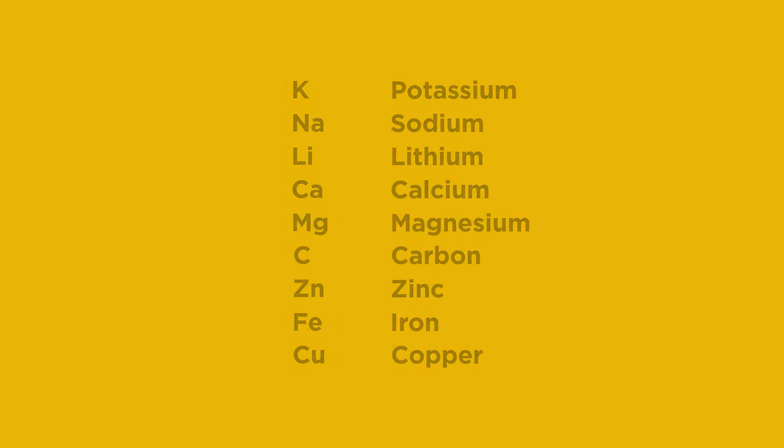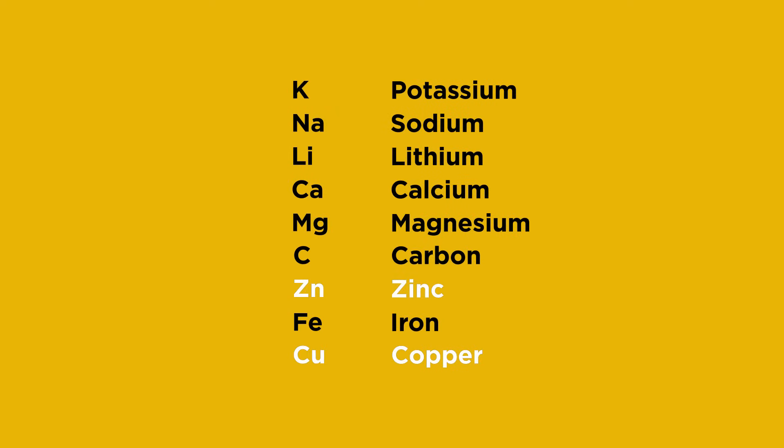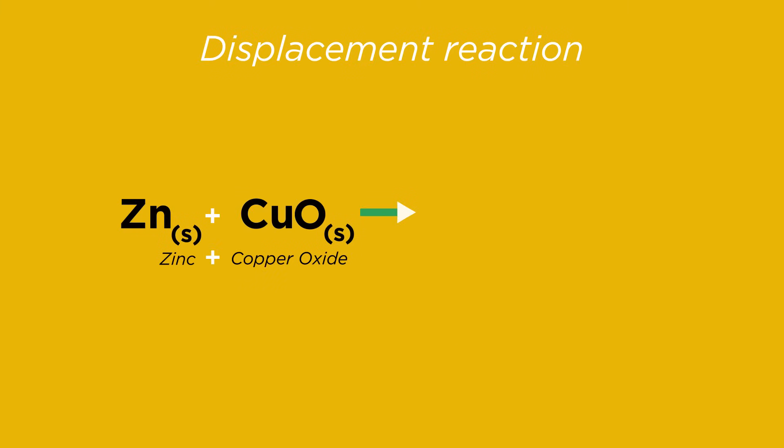Look at where the metals zinc and copper are in the reactivity series. Zinc is above copper and so is the more reactive metal of the two. So zinc being a more reactive metal can push out or displace copper from its compound.